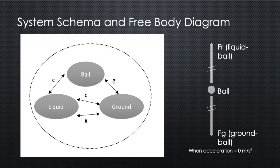In our system schema, we have the liquid in contact with the ball and the ground, and we have the ground exerting gravitational force on both the ball and the liquid. In our free body diagram, you can see that when the ball reaches its terminal velocity, acceleration is zero, so the net force will be zero. Therefore, the resistive forces of the liquid on the ball in the upwards direction will be equal and opposite to the gravitational forces on the ball in the downwards direction.